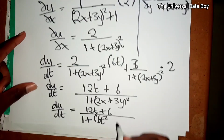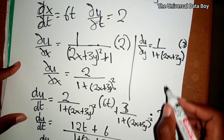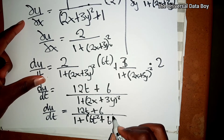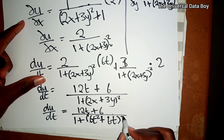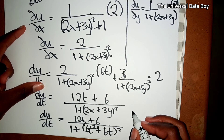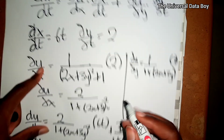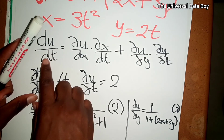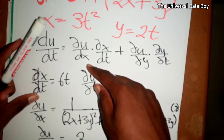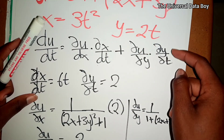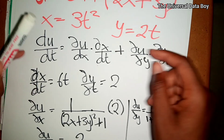Adding the y term: y = 2t, so 3y becomes 6t. The final result is du/dt = (12t + 6) over 1 plus (6t² + 6t) squared. To recap: du/dt equals ∂u/∂x times ∂x/∂t plus ∂u/∂y times ∂y/∂t.